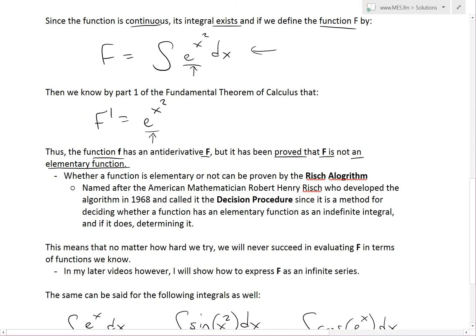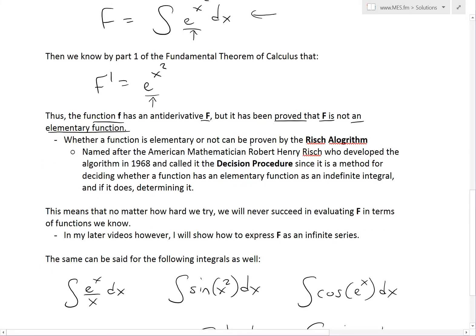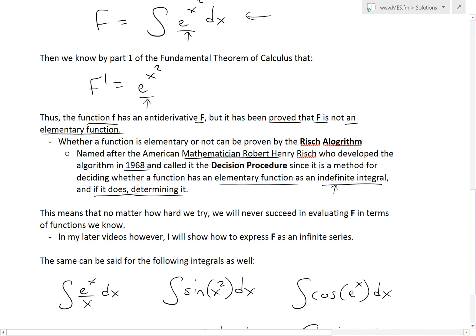To get to the proof of this, that's more complicated than I'm going to go through right now. But whether a function is elementary or not can be proven by the Risch algorithm. It was named after the American mathematician Robert Henry Risch, who developed the algorithm in 1968, and called it the decision procedure, since it is a method for deciding whether a function has an elementary function as an indefinite integral. And if it does, determining that indefinite integral.